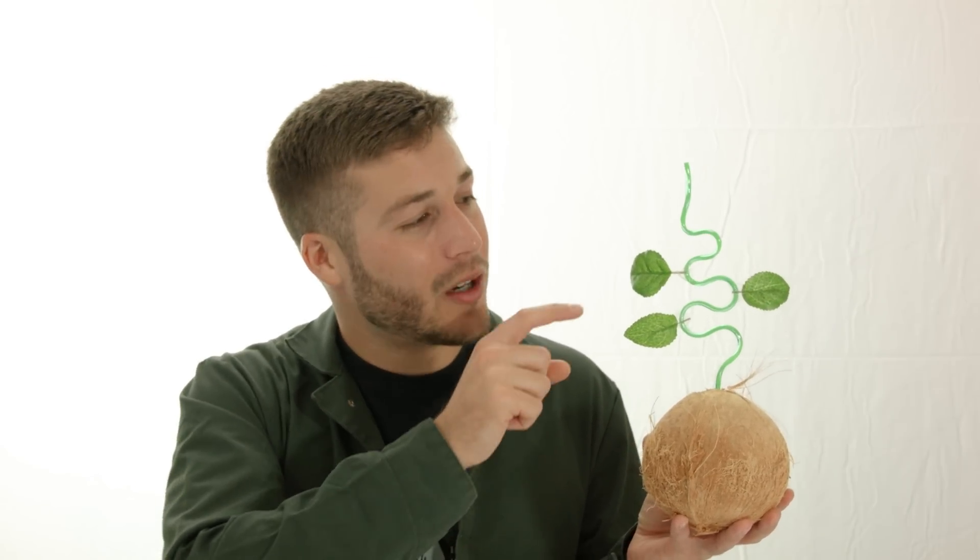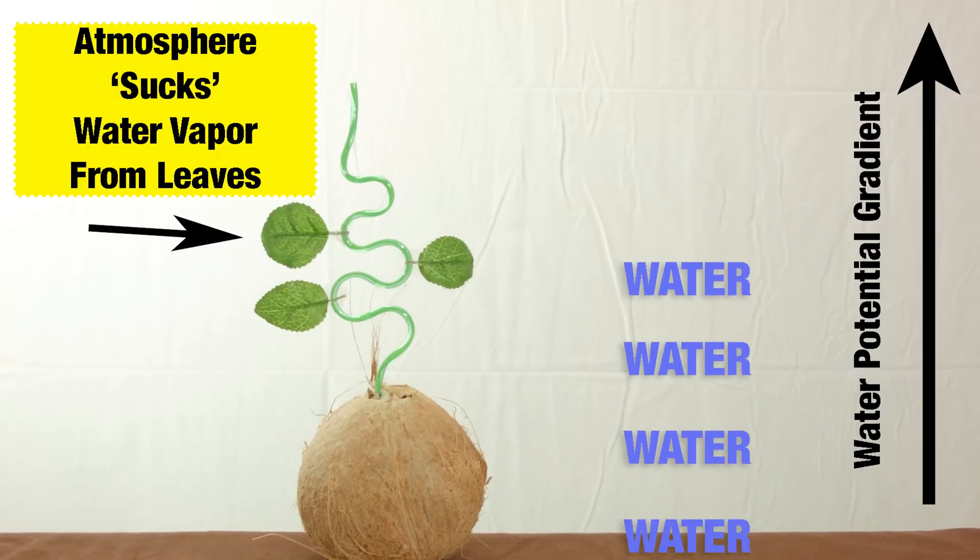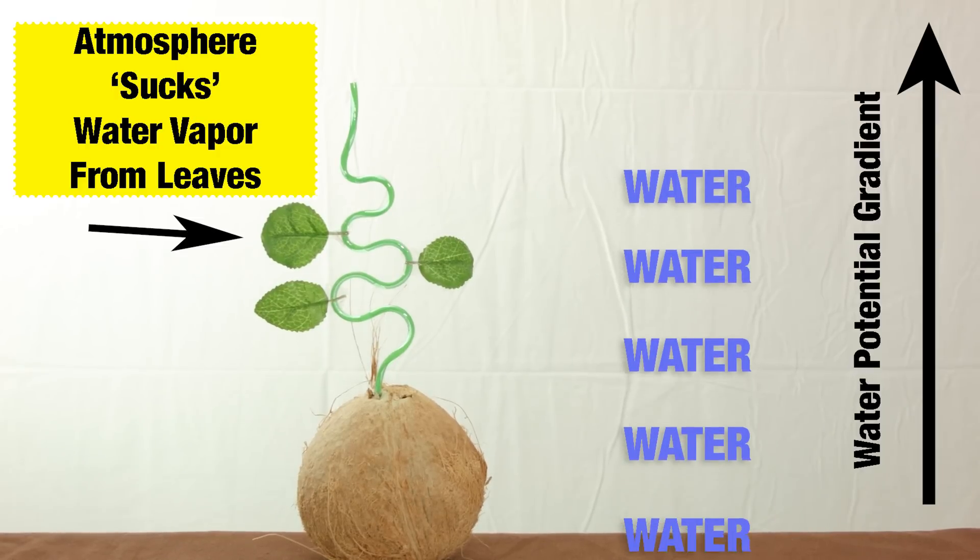As water vapor leaves the leaves — leaves the leaves — it generates a negative pressure gradient which is carried all the way down to the roots.